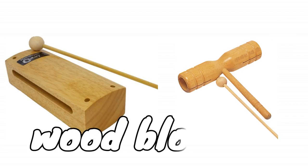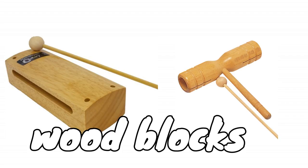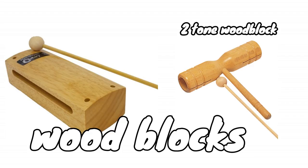Wood blocks — the one with two sides is called a two-tone wood block, which has two different pitch notes, so it's another good instrument for talking about high and low pitches. It's also a great instrument to mimic the sound of a ticking clock.